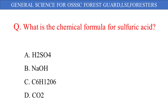What is the chemical formula for sulfuric acid? The given options are: A. H2SO4, B. NaOH, C. C6H12O6, D. CO2. And the correct answer is option A: H2SO4.